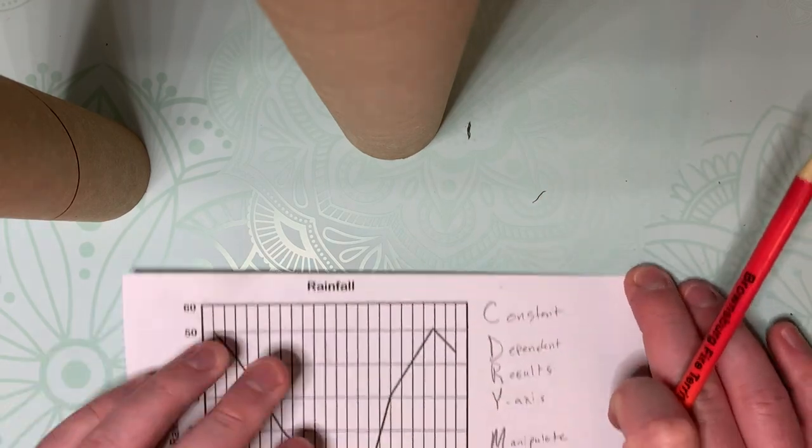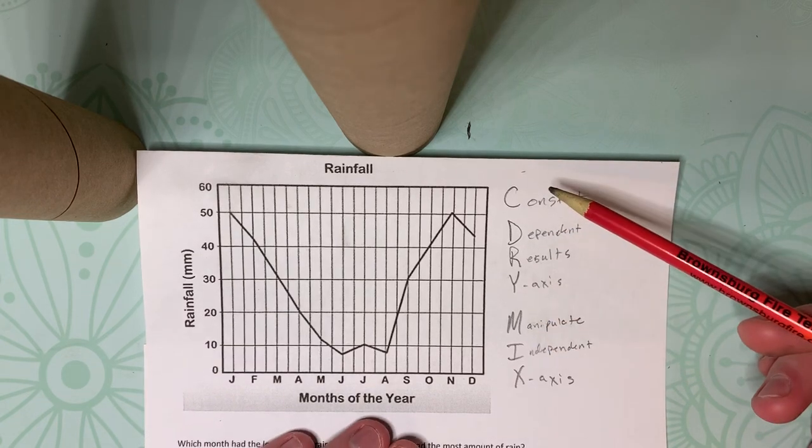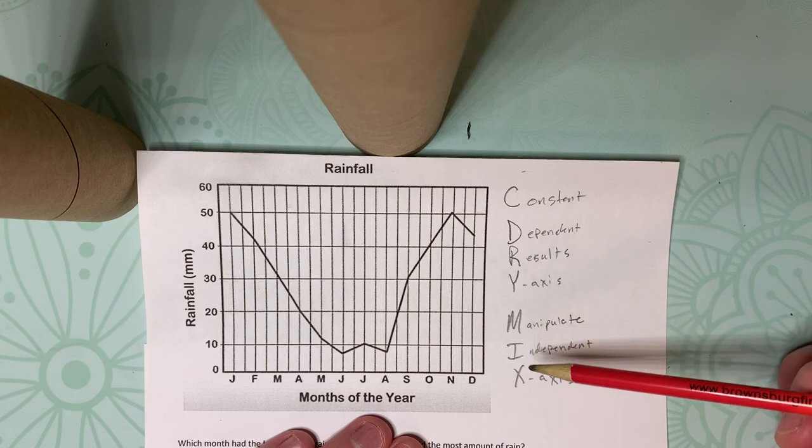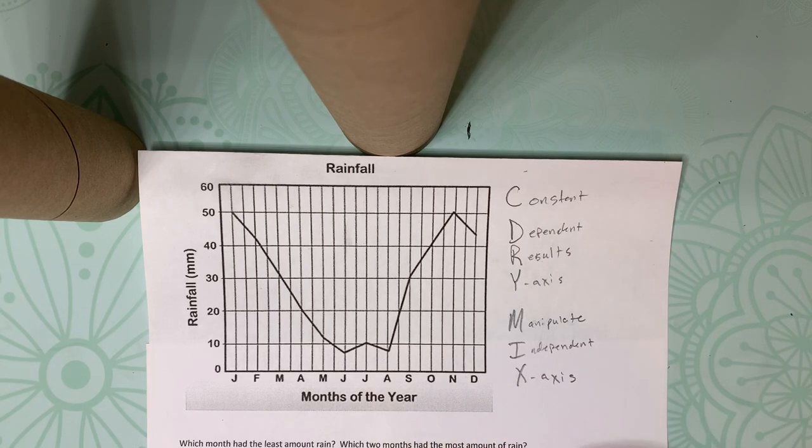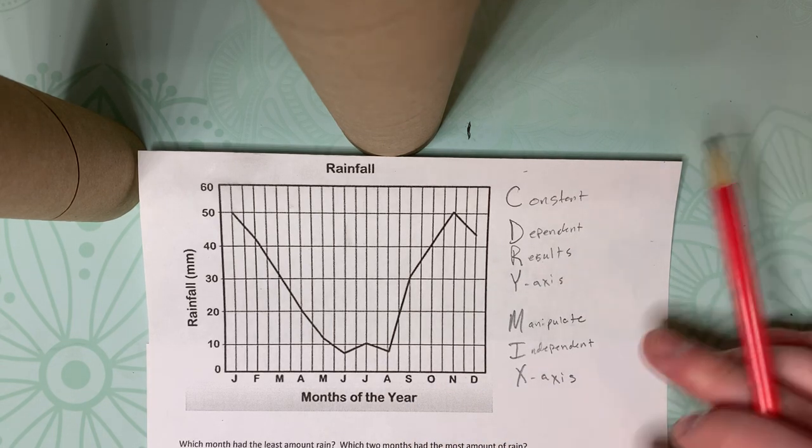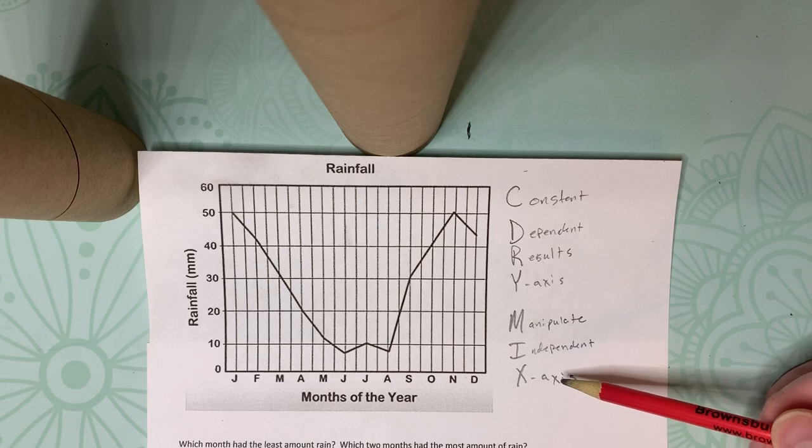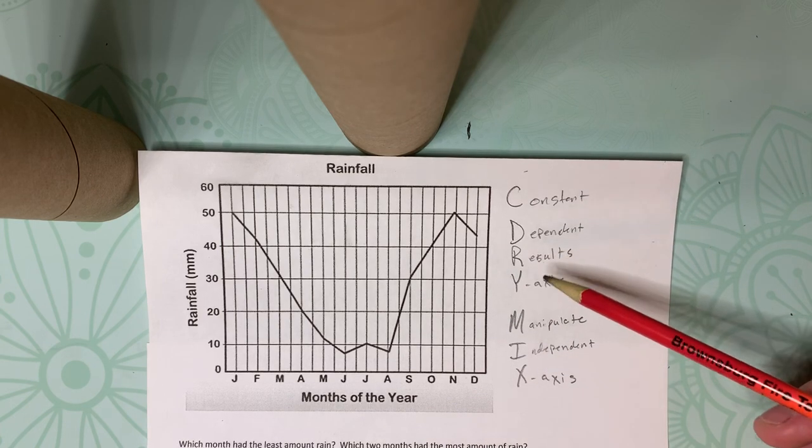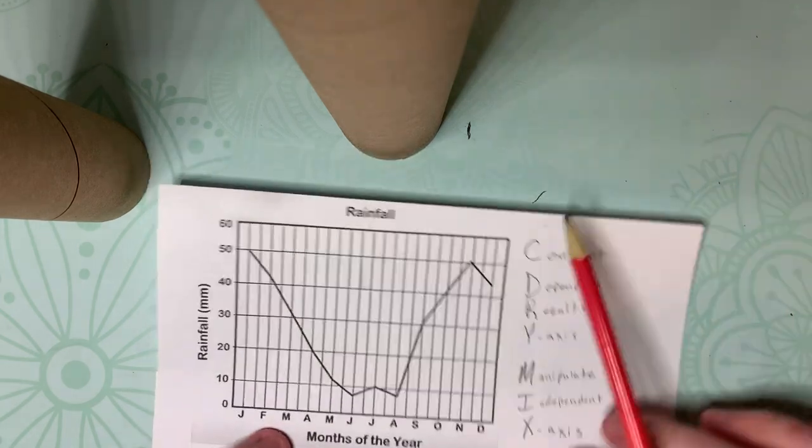All right, looking at our line graph that's up next. I use this to show C-DRY-MIX, constant, dependent, results, y-axis, the manipulate or change, independent, and x-axis. And so looking at this, it's not too hard. You have a couple questions on your line graph as you go from there. Five, it asks, what is the independent variable? Remember, independent is our x-axis. X goes flat, so it's this one right down here. And then the number six asks for, what is the dependent variable? And dependent, y, to the sky, so it goes up and down. So it would be this right there.